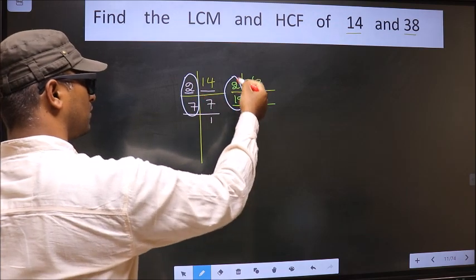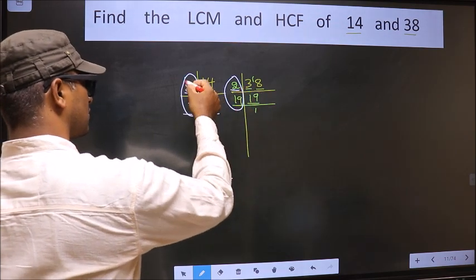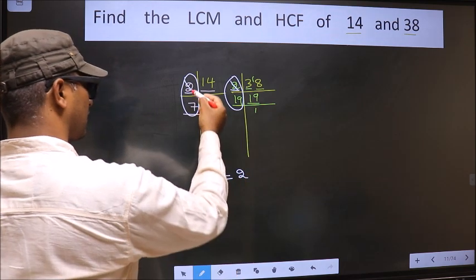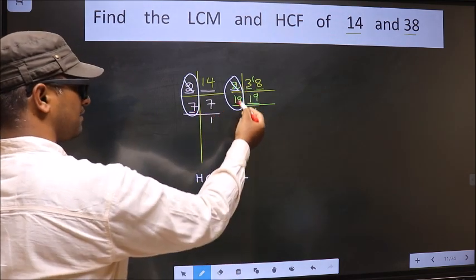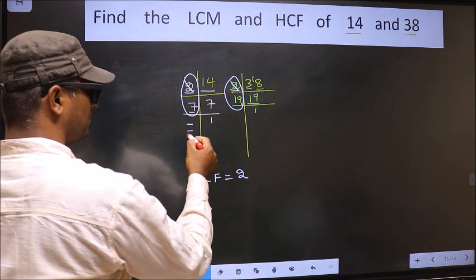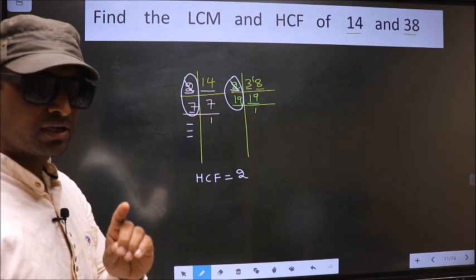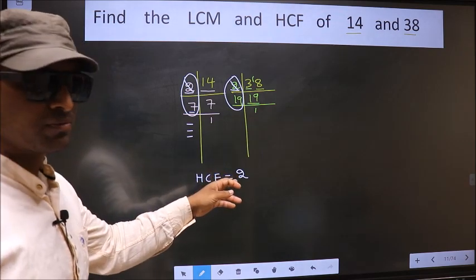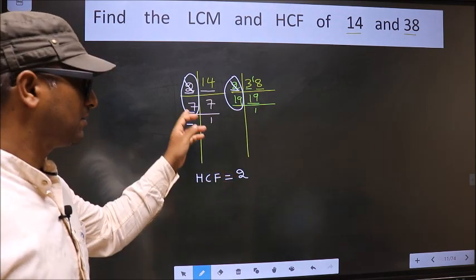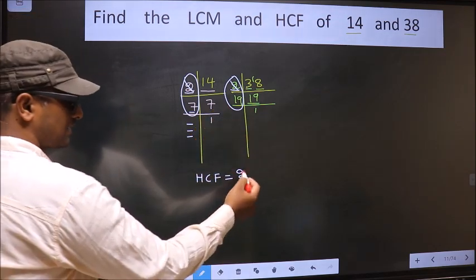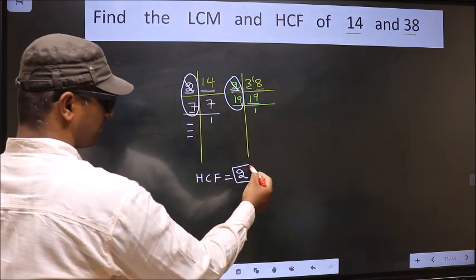Do we have 2 here? Yes. So you cut 2 and write here. Next number 7. Do we have 7 here? No. No more numbers are left. Therefore, we got only one number 2 present in both places. So 2 itself is our HCF.